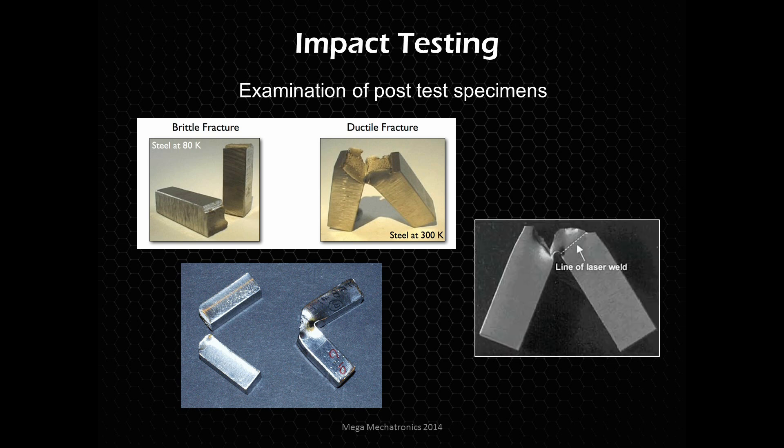As well as standard impact testing, we can test manufacturing processes such as laser welding and other types of welding, heat treatments, and stress relieving. We weld those together and try them at different heat treats to stress relieve and make sure that we don't have any brittle welds.